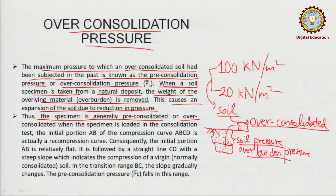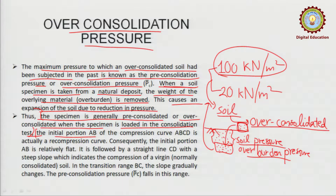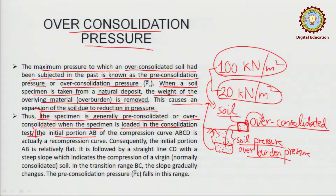The specimen is generally pre-consolidated or over-consolidated when it is loaded in the consolidation test. The specimen we have taken out or dug out from the ground is trying to expand — the overburden pressure has been removed from it. This is the same condition where a higher pressure was being applied before. After we dig it out, the pressure on it has reduced considerably, so this soil will be categorized as over-consolidated.